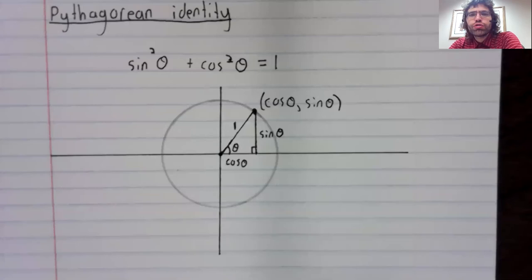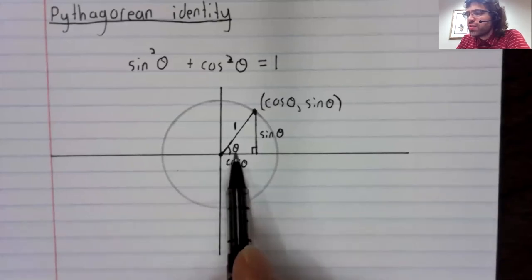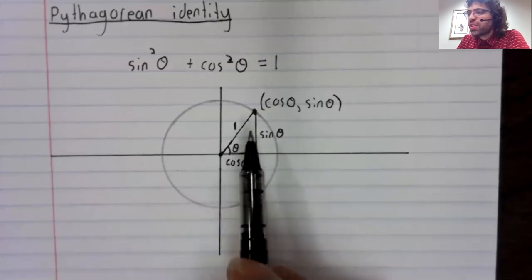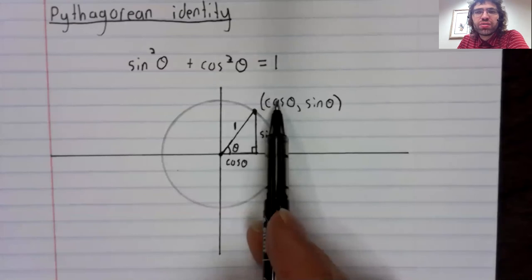you will create a right triangle whose legs are the cosine and the sine. This distance is the x-coordinate of this point. This distance is the y-coordinate.